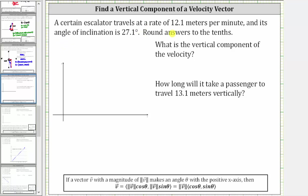A certain escalator travels at a rate of 12.1 meters per minute, and its angle of inclination is 27.1 degrees. We're asked to determine the vertical component of the velocity, and then how long it will take a passenger to travel 13.1 meters vertically.